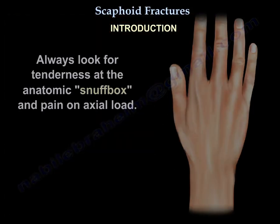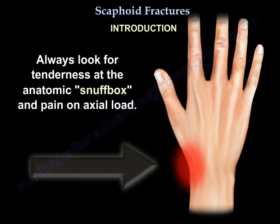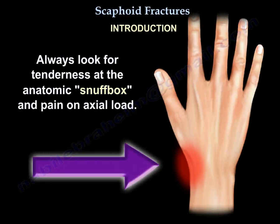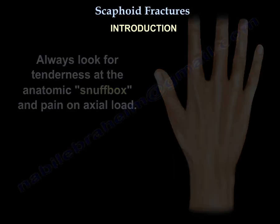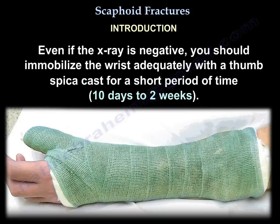Always look for tenderness at the anatomical snuff box and pain on axial load. Even if the x-ray is negative, you should immobilize the wrist adequately with a thumb spica cast for a short period of time — 10 days to 2 weeks.